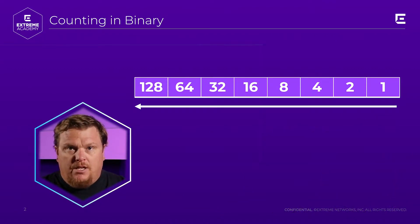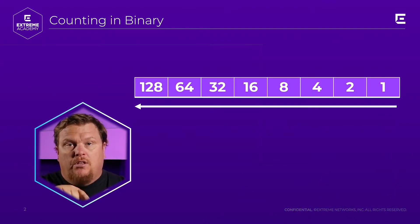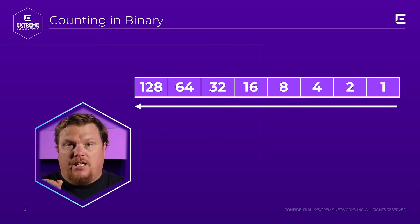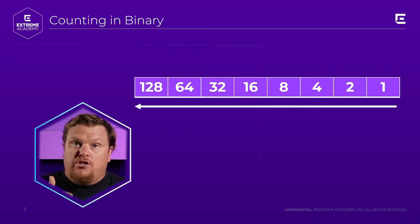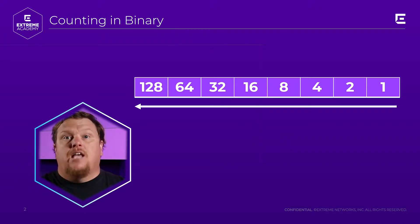Binary does the exact same thing, but remember, we're in base two. You just multiply by two every time. The first digit is the ones place, the next is the twos, the fours, the eights, the sixteens, the 32s, 64s, 128, et cetera.